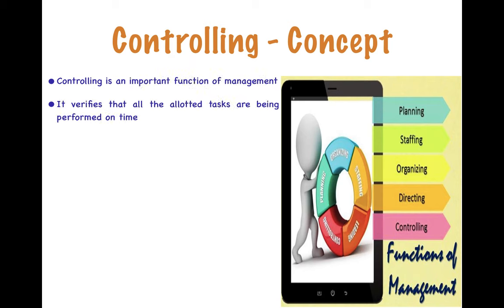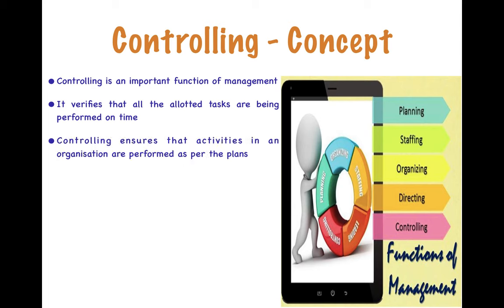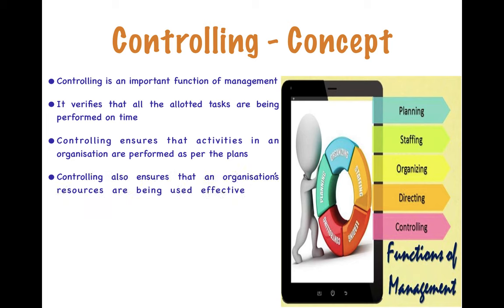Controlling basically does three tasks. First, it verifies that all the allotted tasks are being performed on time. Secondly, it ensures that activities in an organization are performed as per the plans. And thirdly, it ensures that the organization's resources are being used effectively and efficiently for the achievement of predetermined goals. So the three things to take care of are the time factor, the plans or activities being performed, and the resources being effectively used.